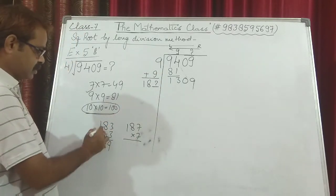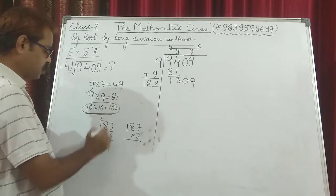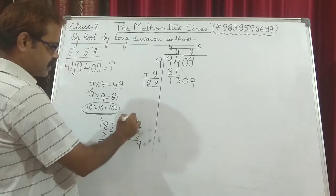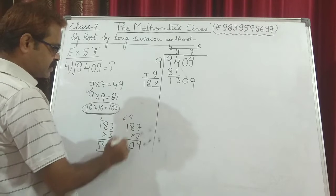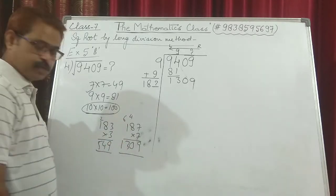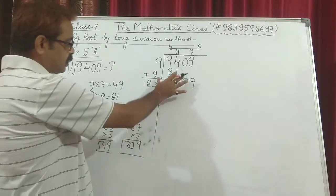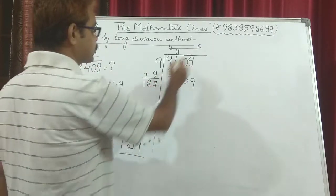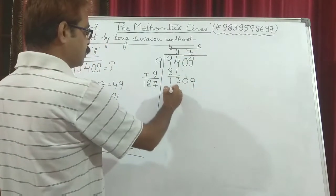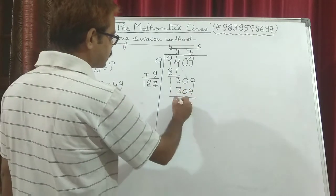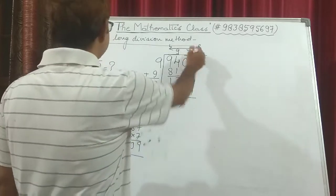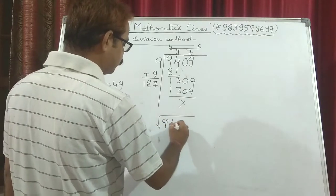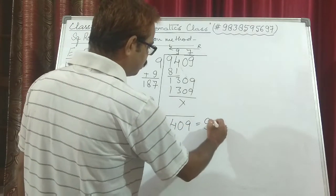Checking 183 into 3: 3 times 3 is 9, 8 times 3 is 24 plus carry gives the result. Checking 187 into 7: 7 times 7 is 49, 8 times 7 is 56, 1 times 7 is 7 — we get 1309. The number that should come here is 7. So 7 and 7: 187 times 7 gives 1309 with nothing left as remainder. So the final value is 97, and under root 9409 is equal to 97.